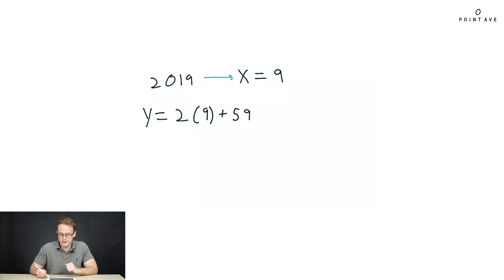Well, we see here it's as simple as 2 times 9 plus 59. We evaluate that, and we get y equals 77. So our tickets in the year 2019 will cost $77, and we're done.